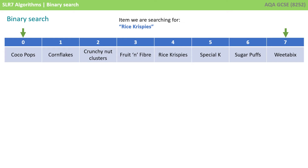With a binary search, instead of starting at the beginning of a dataset and checking each item until the one you're looking for has been found, you calculate a midpoint in the dataset and check if that's the item to be found first. If it's not, and the item you're looking for is lower than the item at the midpoint, then you can disregard all the items to the right of the midpoint and repeat the algorithm only on the left half of the list. In a similar way, if the item you're looking for is greater than the item at the midpoint, you can disregard all the items to the left of the midpoint and repeat the algorithm only on the right half of the list. In doing so, you are disregarding half of the items in the list each time.